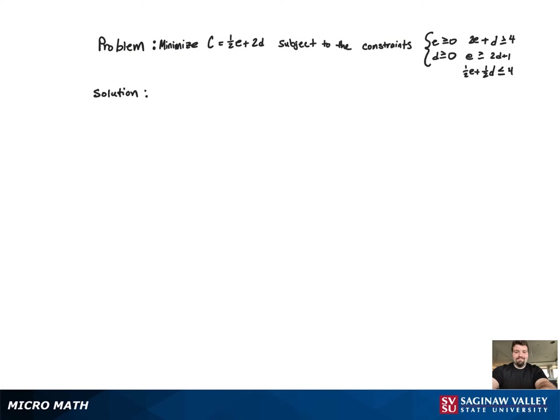For this linear programming problem, we will first look at the two constraints: e greater than or equal to 0 and d greater than or equal to 0. This means we're restricted to the first quadrant.